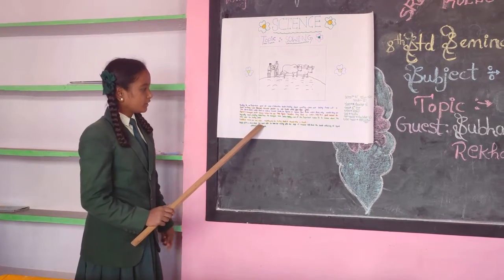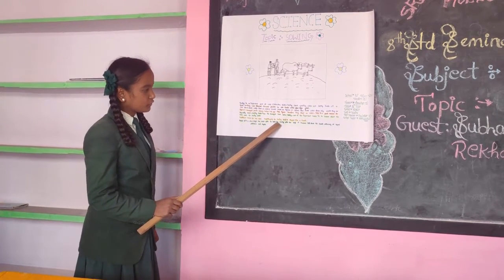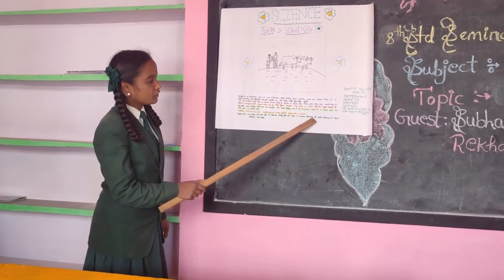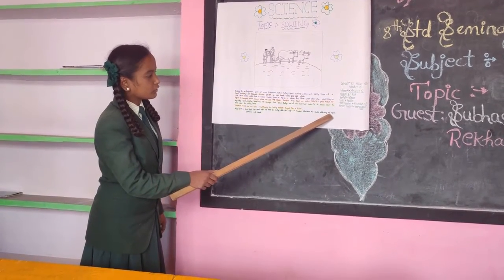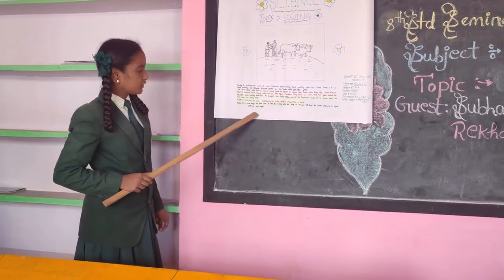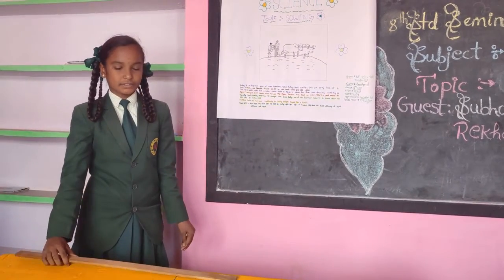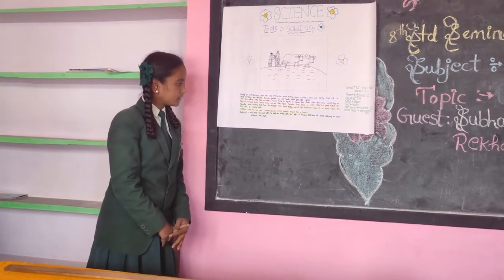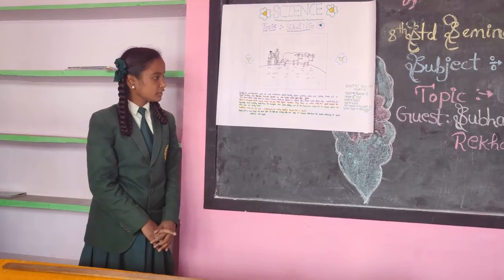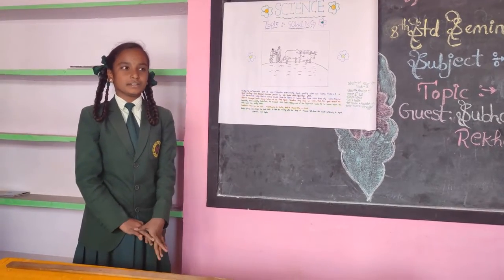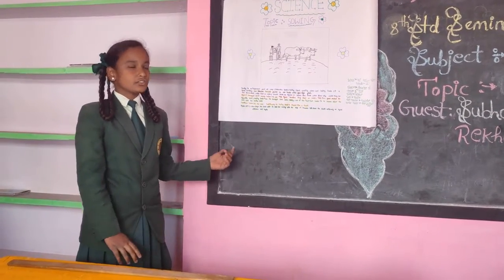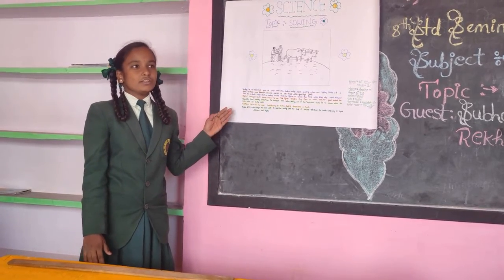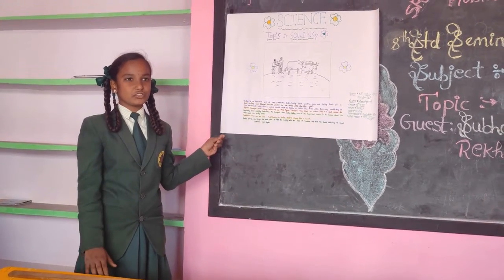Nowadays the seed drill is used for sowing with the help of a tractor. The seed drill places seeds at uniform and equal distances, improving yield. Nowadays farmers only use the seed drill because it makes sowing much easier.